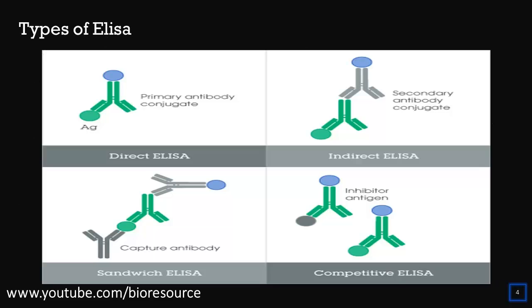In direct ELISA, antigen is coated on the ELISA plate and a primary antibody conjugated with an enzyme is added to the well for detection. In indirect ELISA, antigen is coated on the well, primary antibody is added, and then a secondary antibody with an enzyme tag is added for detection.